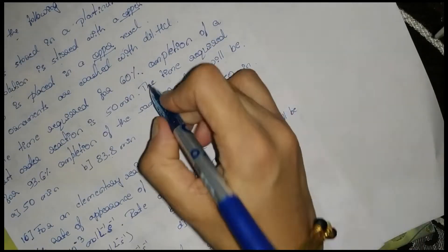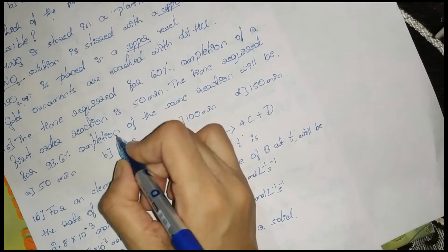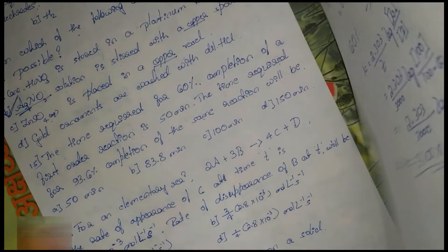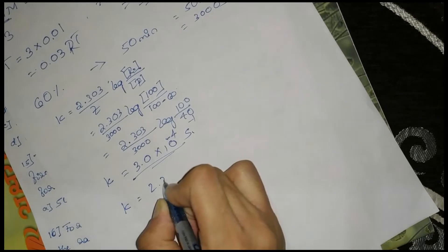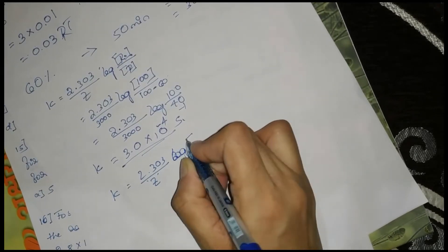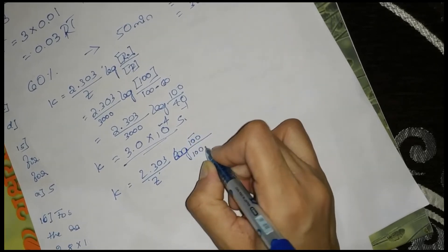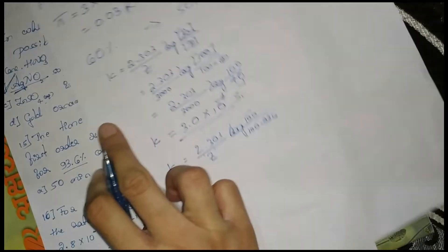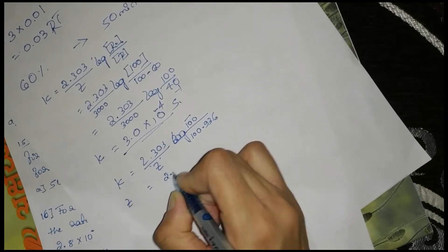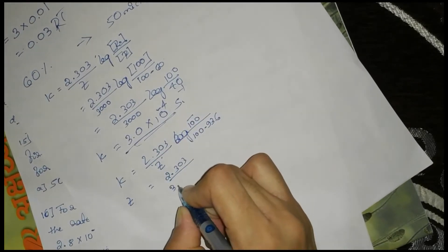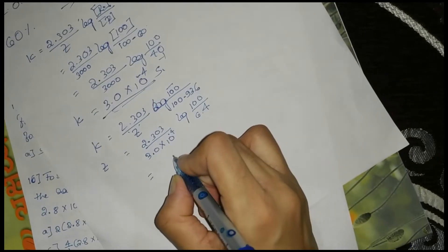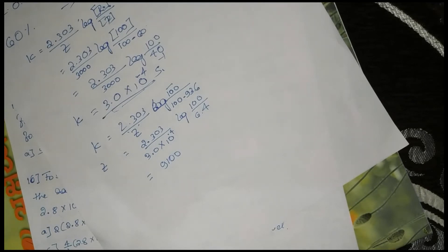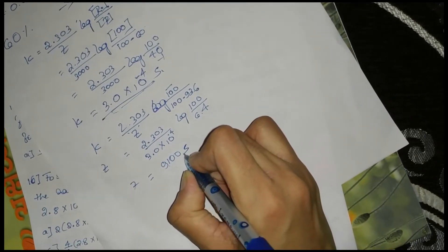Using the same rate constant k = 3.0 × 10⁻⁴ s⁻¹, for 93.6% completion: t = 2.303/k × log(100/6.4), which gives approximately 9100 seconds, or about 150 minutes when divided by 60.